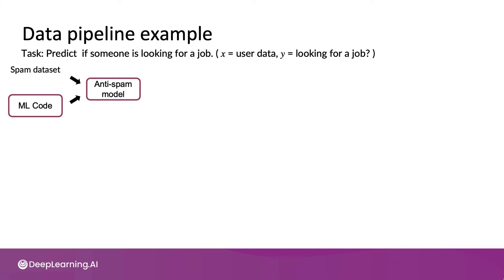These arrows indicate flow of information or flow of computation, where training your ML code on the spam dataset gives you your anti-spam model. You then take your user data and apply the anti-spam model to it to get the de-spam user data.